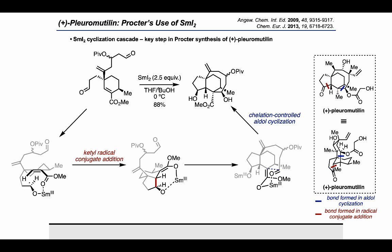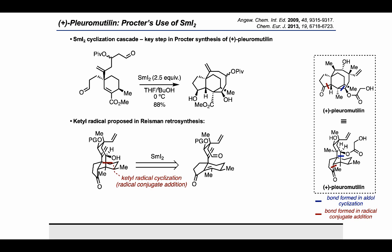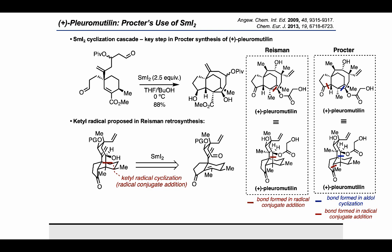Comparing that process to the ketyl radical cyclization being proposed in the retrosynthesis of Reisman, we can see that the radical conjugate addition is being used to form a different bond in this case. If we do a side-by-side comparison, we can get an even better picture of how each route is using samarium diiodide to put together the core of the target.